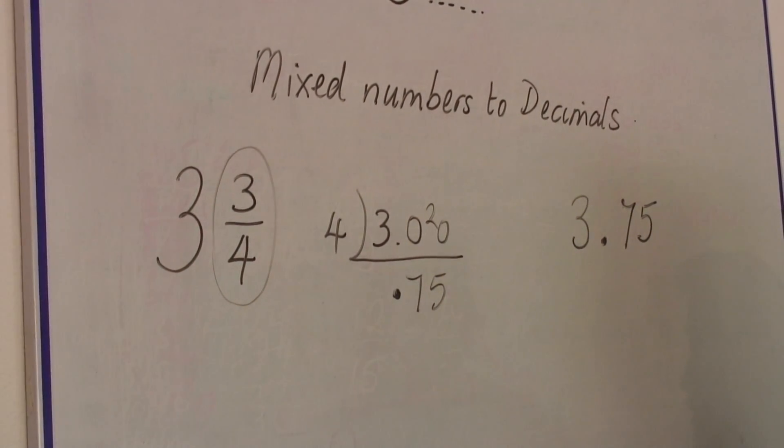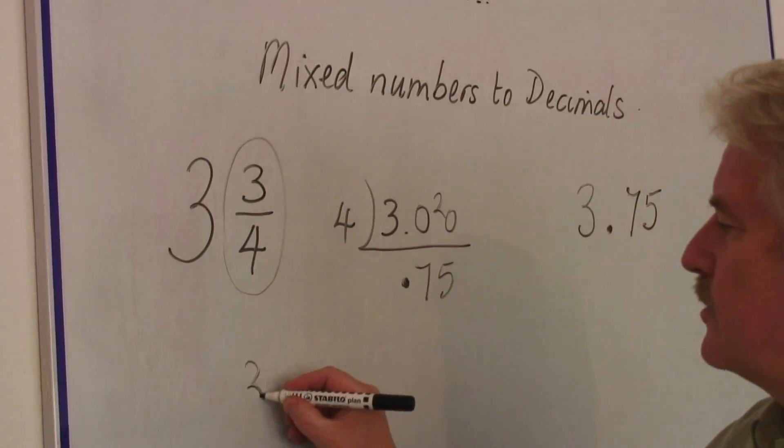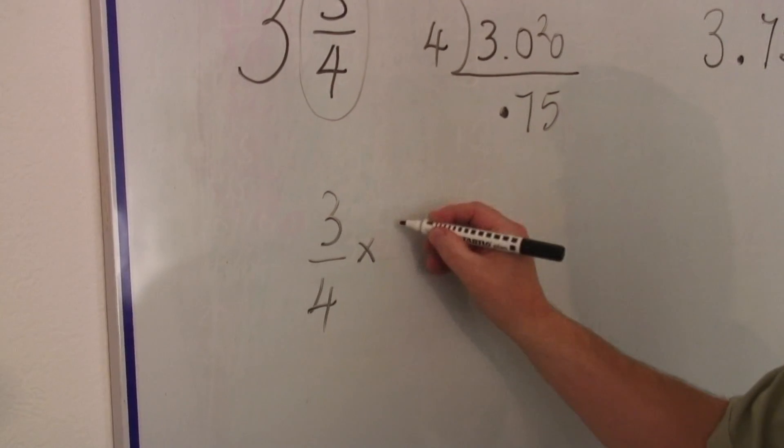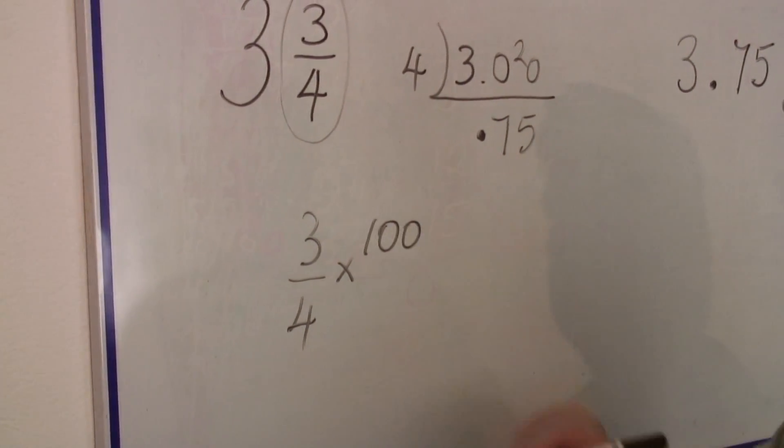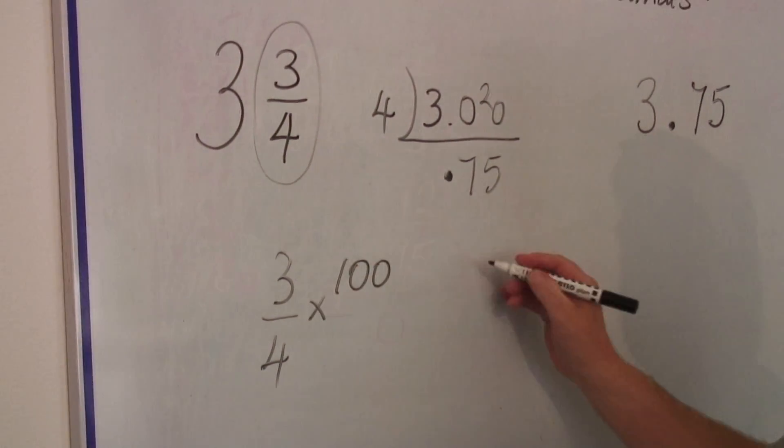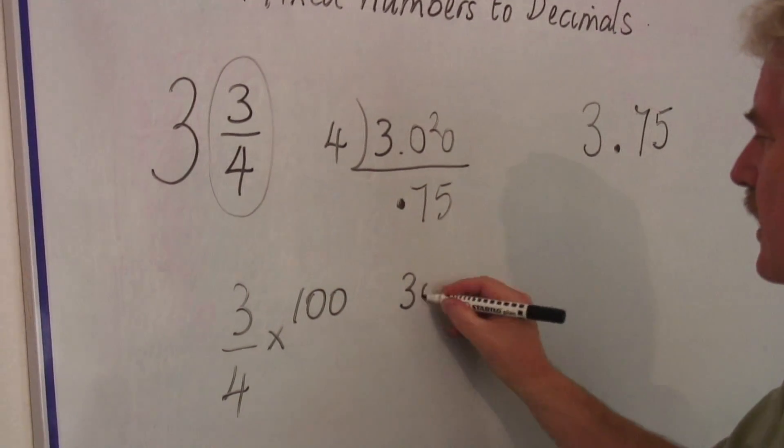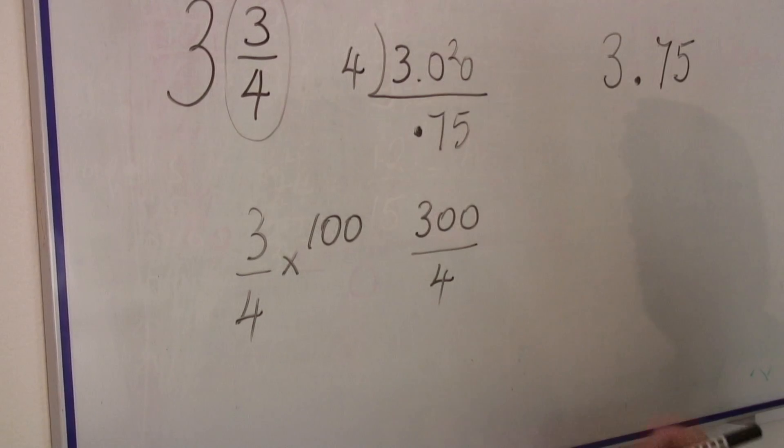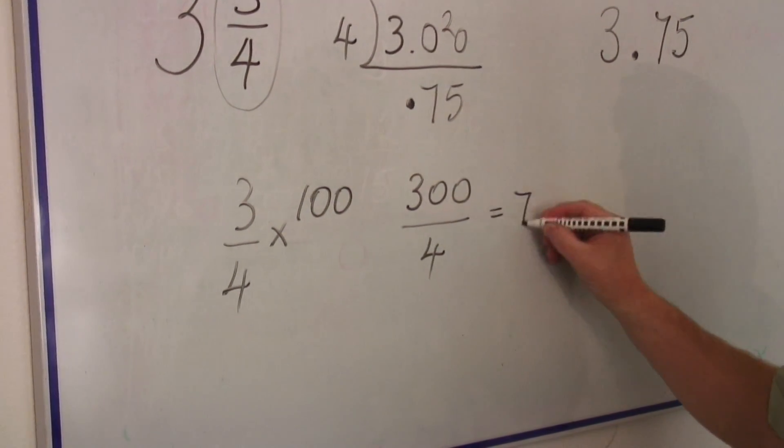Another way, if you don't like that one, is very simple. Take the three quarters and make a percentage. So it's three times a hundred is three hundred. Then divide it by four. And what do we get? We get seventy-five.